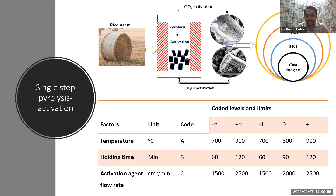Next, we used single-step physical activation and optimized different process parameters including temperature, holding time, and activation agent flow rate. We targeted a temperature range of 700 to 900°C, holding time from 60 to 120 minutes, and activation agent flow rate from 1500 to 2500 cm³ per minute.